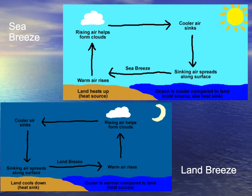At night we have the opposite. The land cools off really quickly, so the ocean water is a little bit warmer. At night we have warm air over the ocean rising, going up, cooling, sinking, coming over the land. As it drops in, the cooler air from the land comes out to the ocean — and we call that a land breeze.